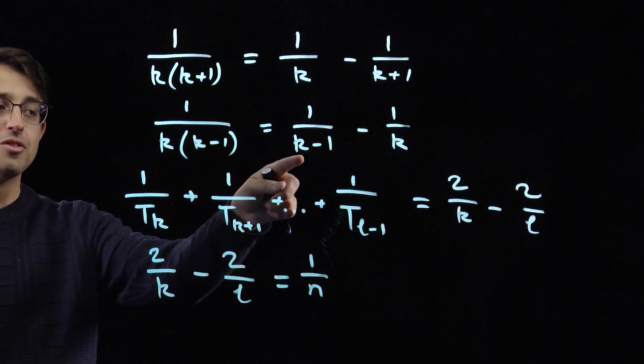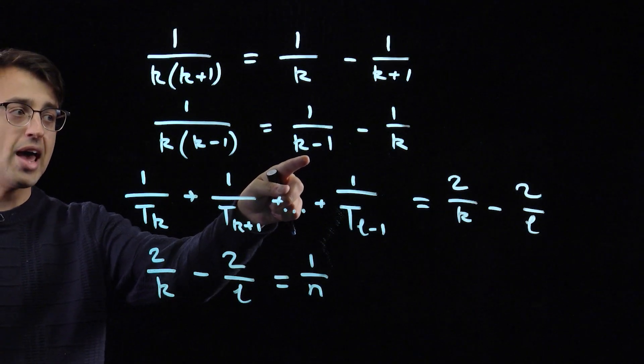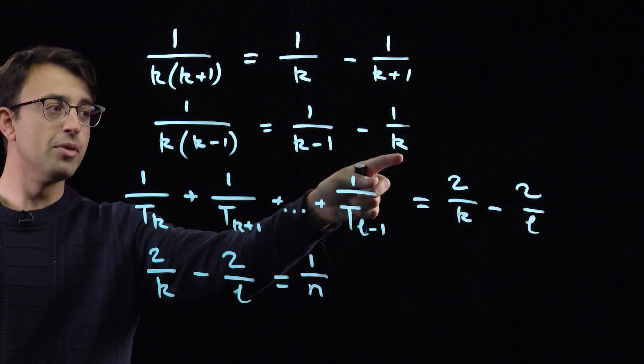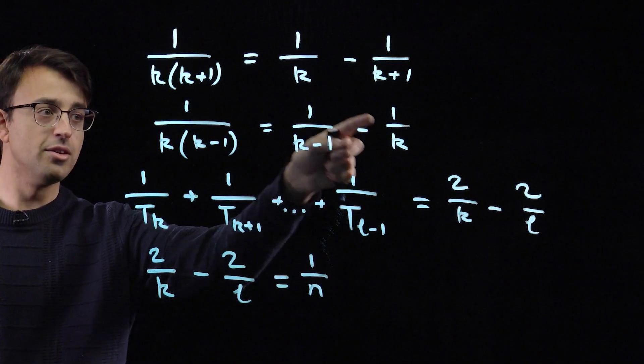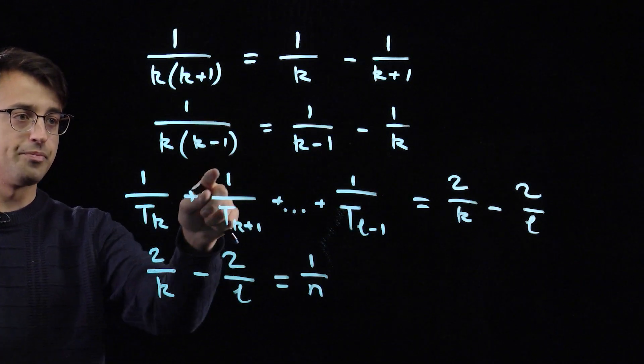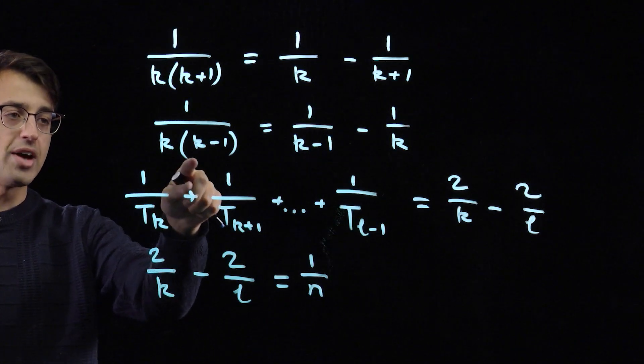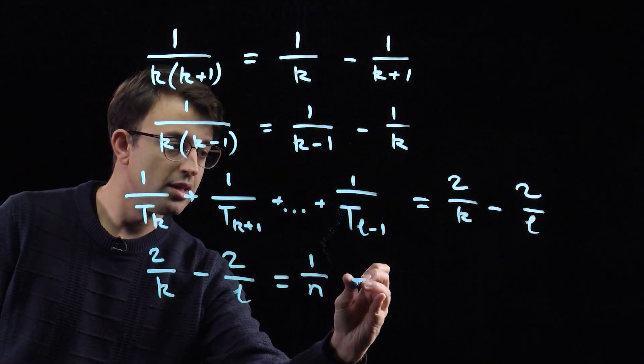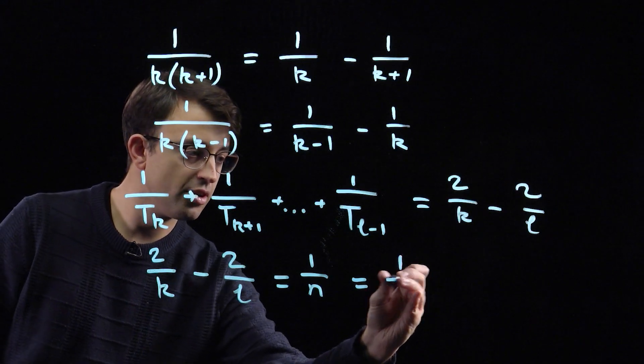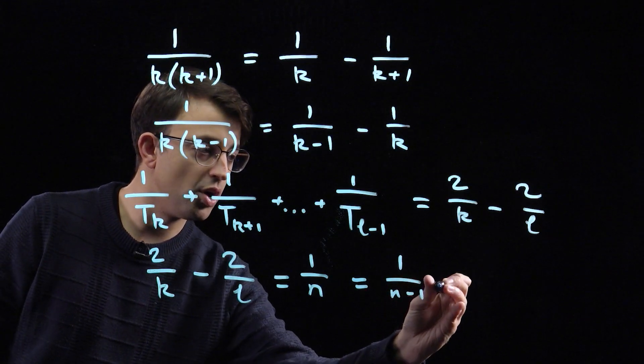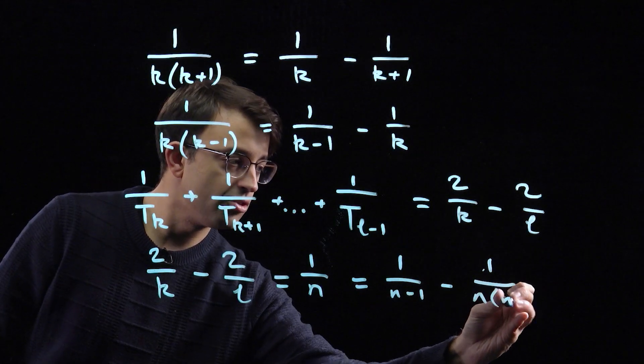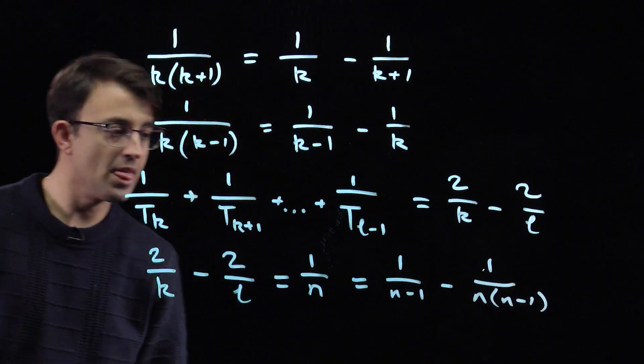So clearly we're going to have to convert this k into an n. But then if we move this term 1 over k or 1 over n to the left and this term 1 over n times n minus 1 to the right, let's write down here what we get. We get 1 over n minus 1 minus 1 over n times n minus 1.